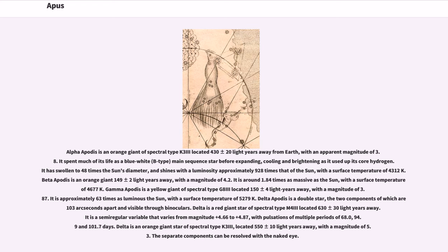Gamma Apodis is a yellow giant of spectral type G8 III located 150 plus or minus 4 light-years away, with a magnitude of 3.87. It is approximately 63 times as luminous as the Sun, with a surface temperature of 5,279 K.